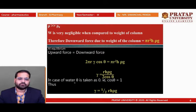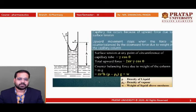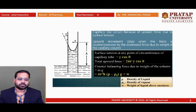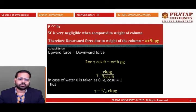In the case of water, the angle of contact is very small and is taken as 0°. Since cos 0° = 1, the final equation for surface tension becomes gamma = ½rhρg.